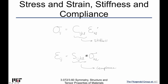Symmetry plays a very important role when working with these types of tensors. Epsilon is a second-rank tensor, so there are nine components. Sigma is also a second-rank tensor with nine components, which means that in the general case there are 81 elements in the middle to deal with.